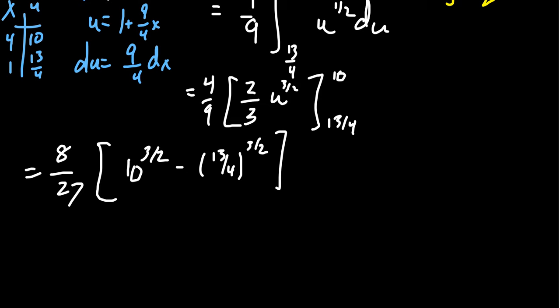Now, be aware that taking something to the 3 halves power, u to the 3 halves, this is the same thing as just taking u times the square root of u. And so that's how we're going to finish this thing up. 8 over 27. We're going to get 10 root 10.